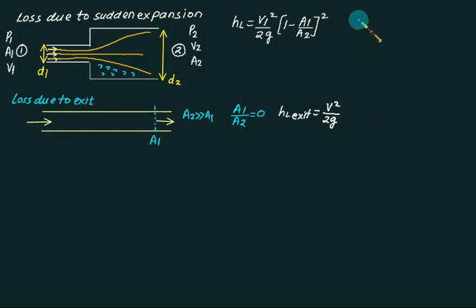This time if I had to write down the coefficient of loss, what is the coefficient of loss for this one? It is (1 minus A1 by A2) whole square. As such there is a value equal to 1, so the loss coefficient equal to 1.